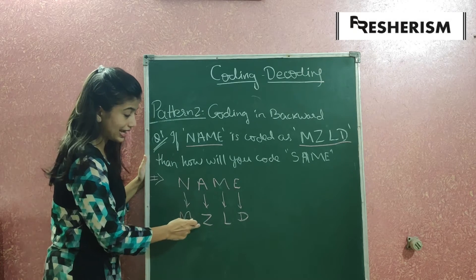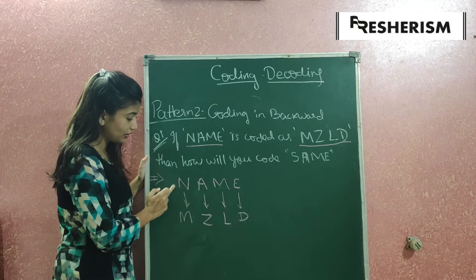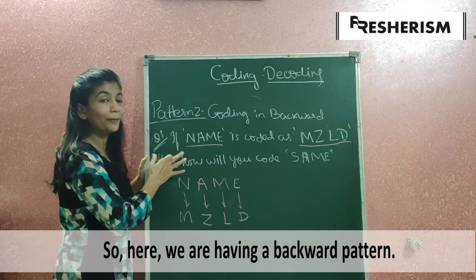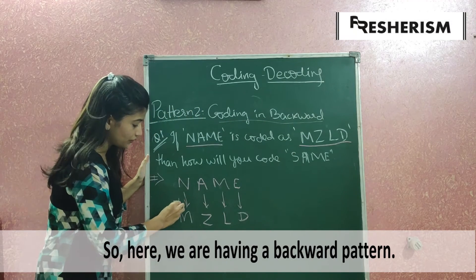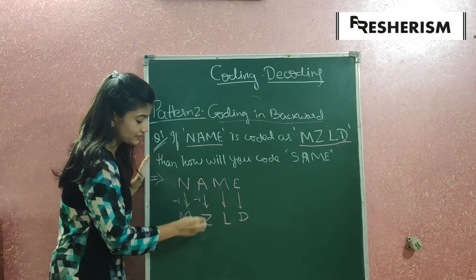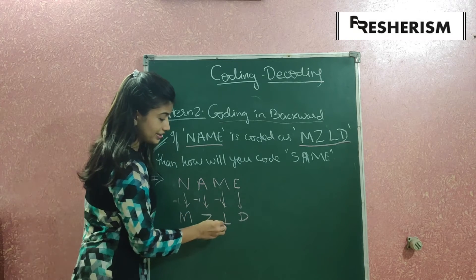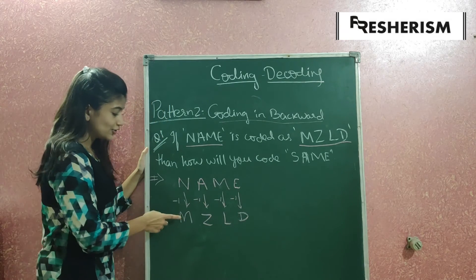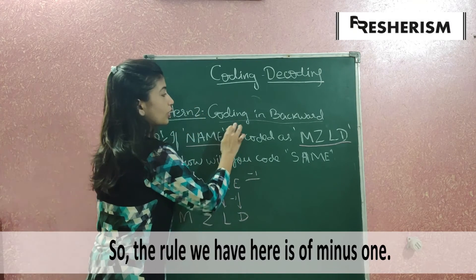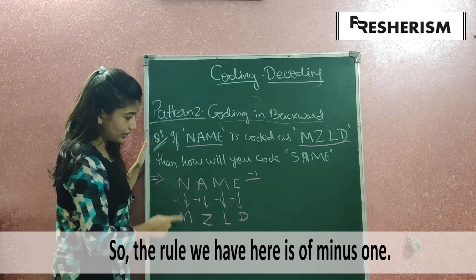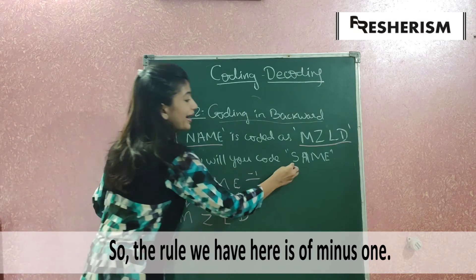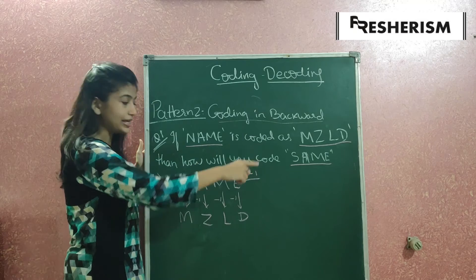Observe the pattern: N→M, A→Z, M→L, E→D. The previous letter of each letter is the code — we are moving backward. The pattern is minus 1. N minus 1 is M, A minus 1 is Z, M minus 1 is L, and E minus 1 is D. This is the rule: coding in backward sequence, minus 1.